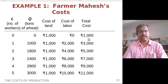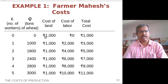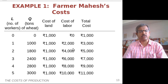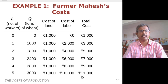The total cost incurred is the sum of the land cost and the cost of labor. So even when he is not growing anything, he still has to pay Rs. 1000 for the land. When he hires one worker, his total cost comes to Rs. 1000 for land and Rs. 2000 for the wages, giving Rs. 3000. The rest of the column follows on similar lines.